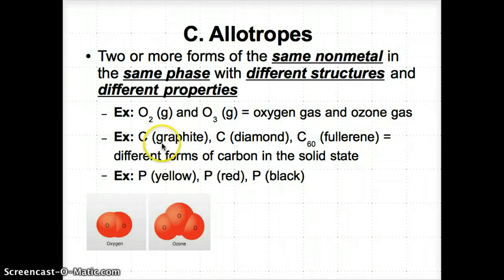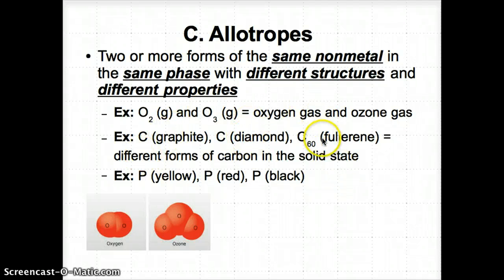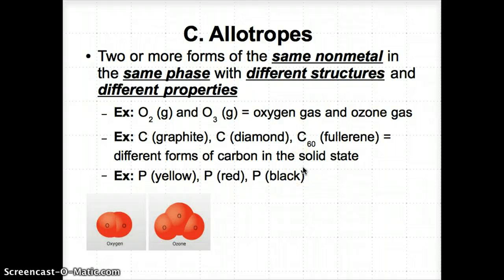Carbon has three different allotropes: C as graphite, C as diamond, and C₆₀ as fullerene — all solids. All three are different forms of carbon in the solid state, containing the same non-metal C in the same phase. But they all have different structures and therefore different properties as a result.